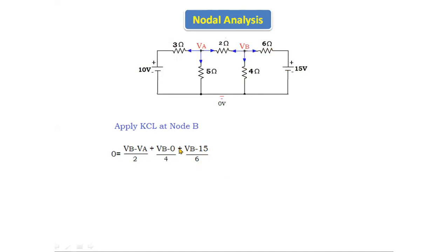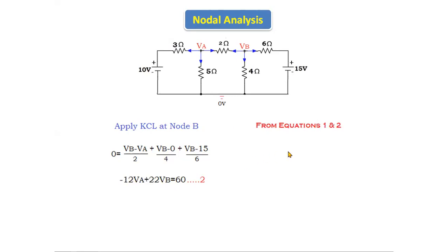Applying KCL at node B and simplifying the equation, we get: −12VA + 22VB = 60. This is Equation 2. Solving Equations 1 and 2 simultaneously, we get VA = 6.17 volts and VB = 6.09 volts.